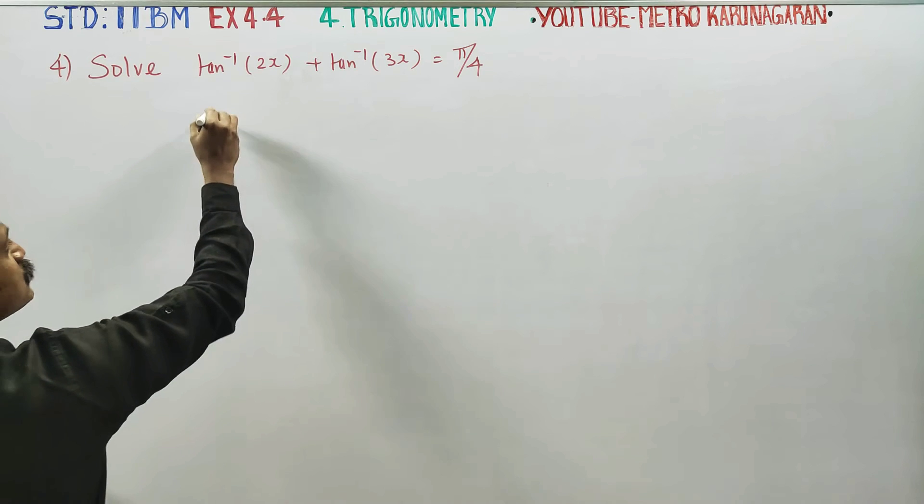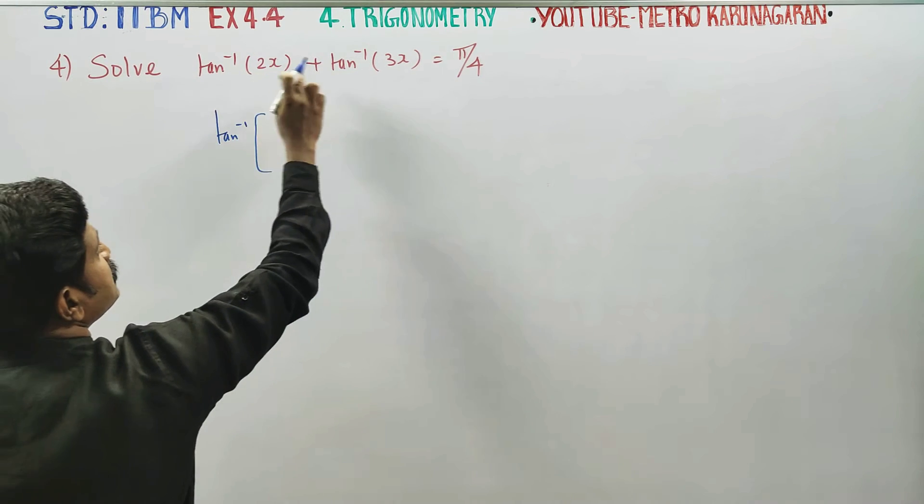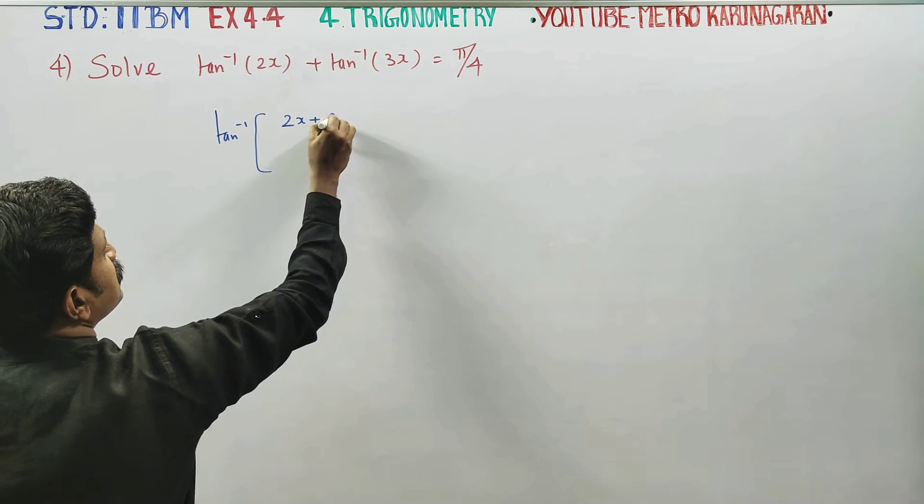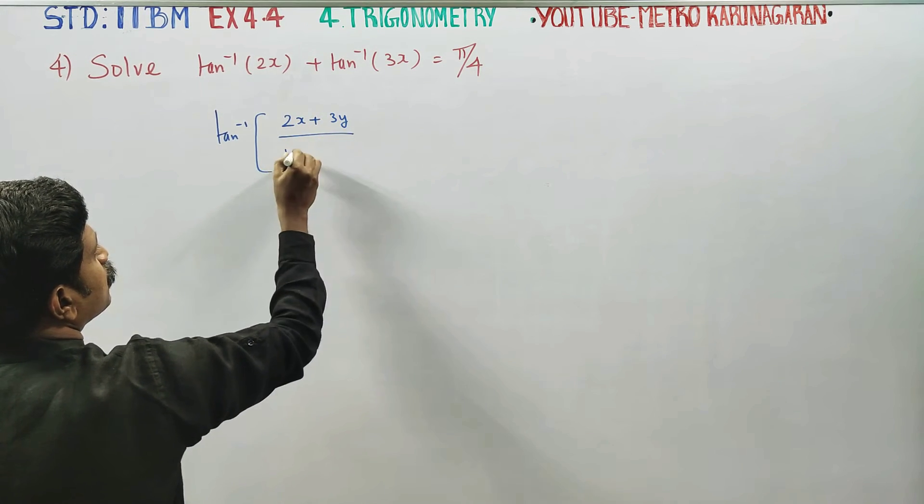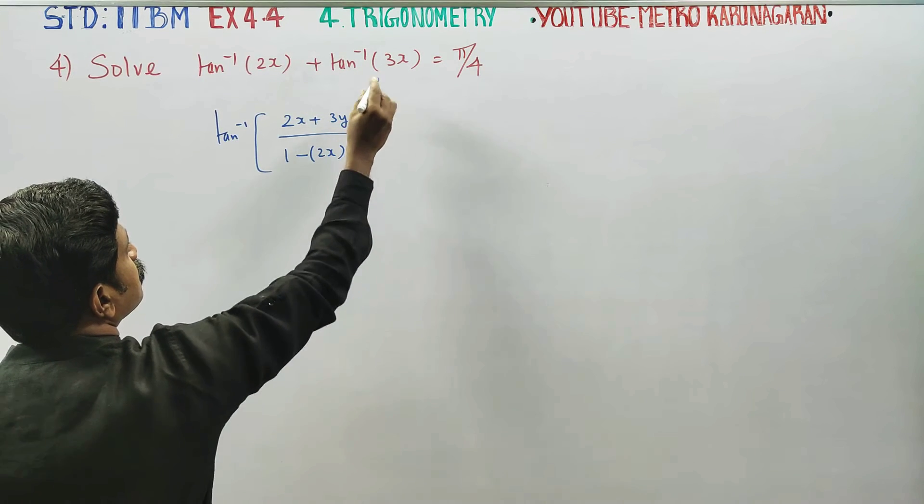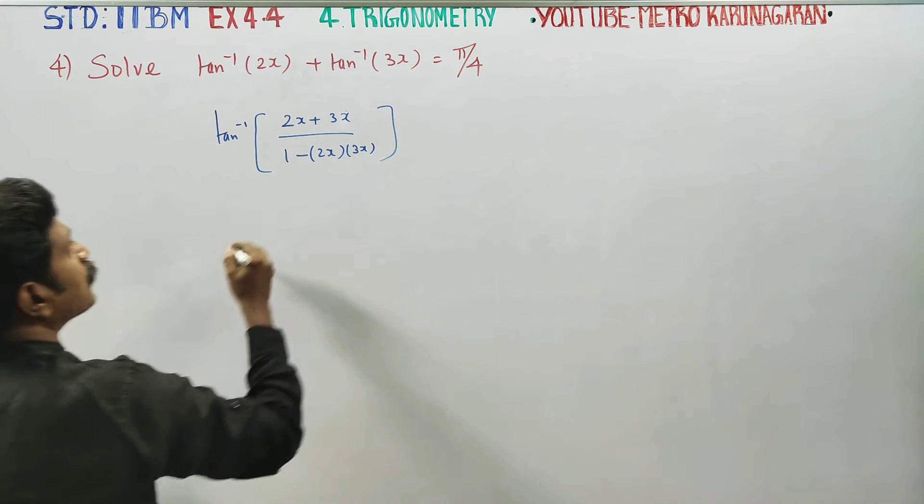I think we'll use the direct formula. Tan inverse of x plus tan inverse of y has the formula x plus y divided by 1 minus x times y. Here y is 3x. This is the formula.